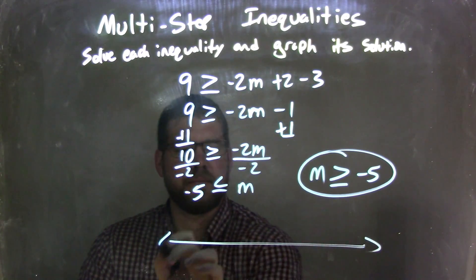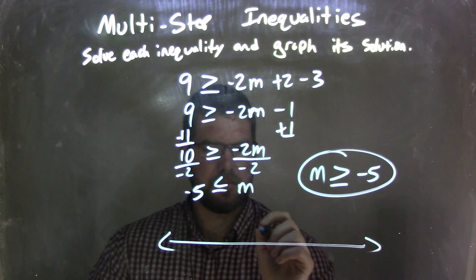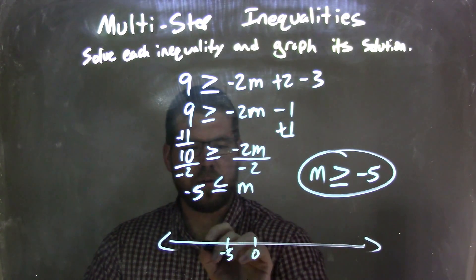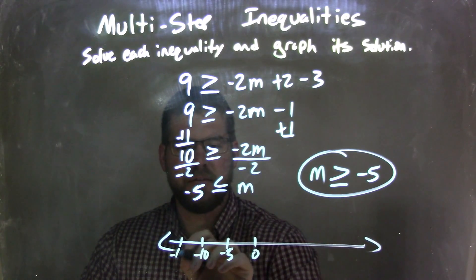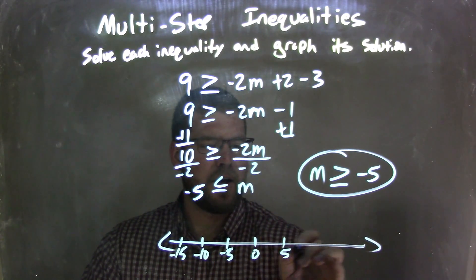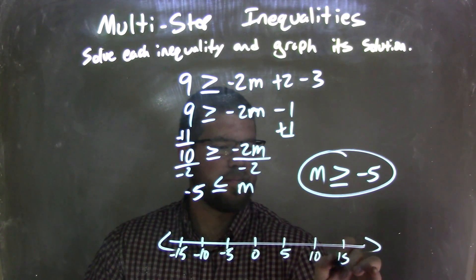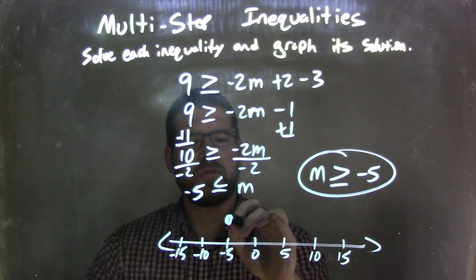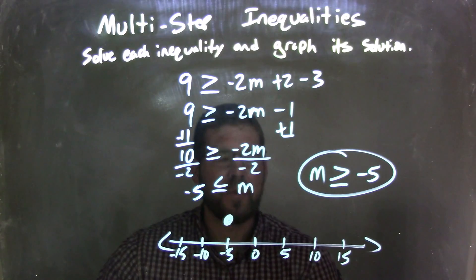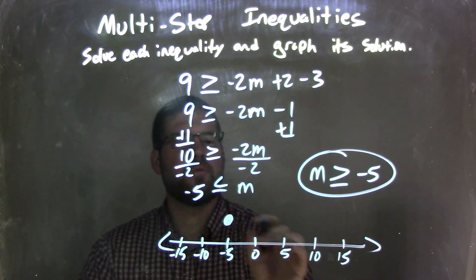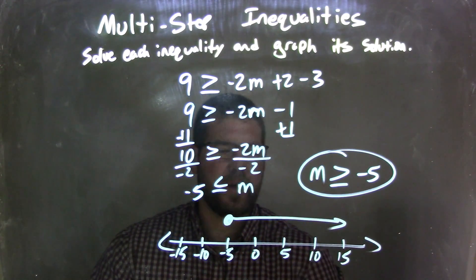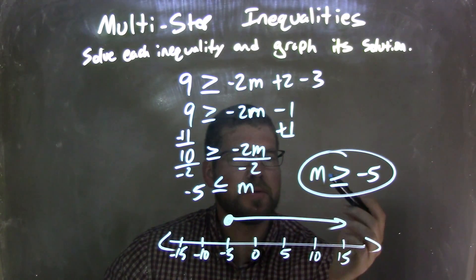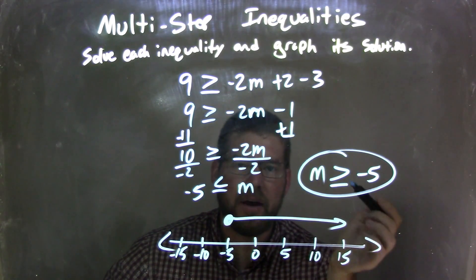Now I want to graph this. On the number line I mark 0, negative 5, negative 10, negative 15, and 5, 10, 15. Since m is greater than or equal to negative 5, I place a closed circle at negative 5 — because it can equal negative 5 — and then shade to the right, because m is also greater than negative 5. And there we have our graph that matches our final answer: m is greater than or equal to negative 5.